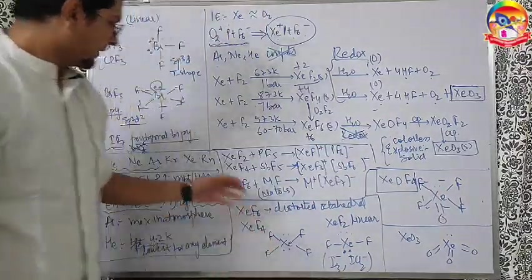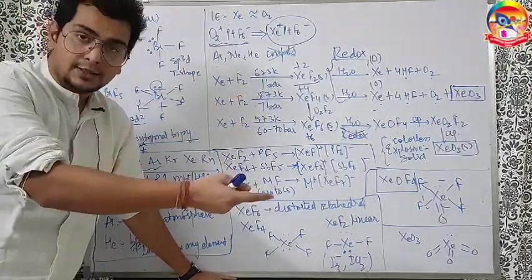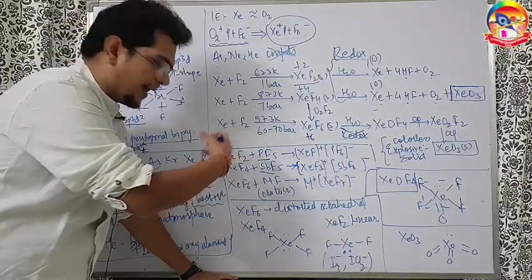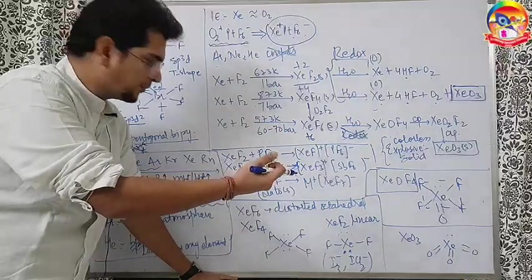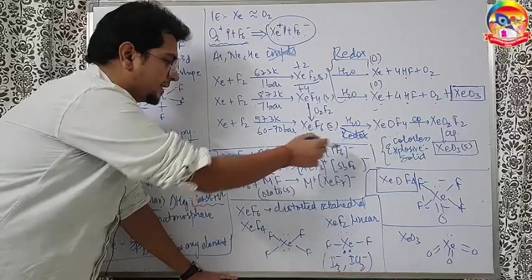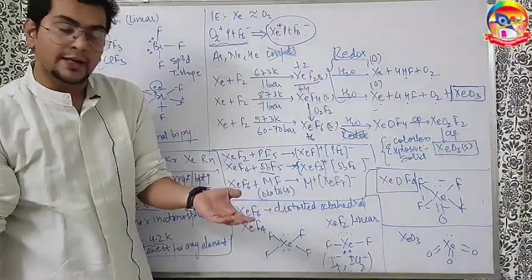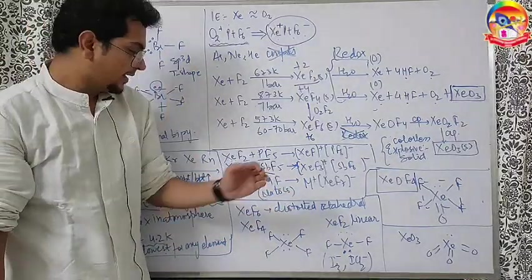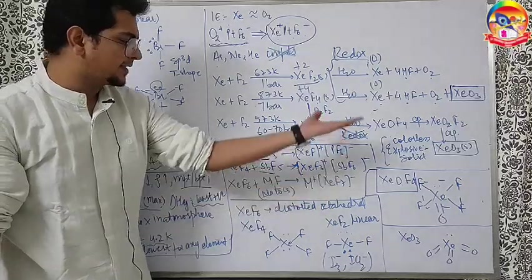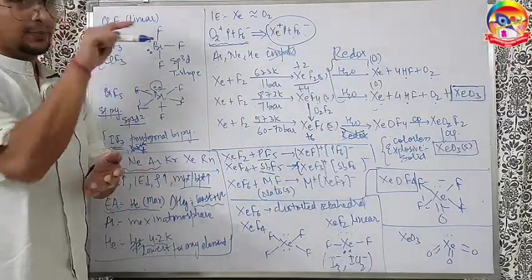Apart from that, XeF2, XeF4, XeF6, they can act like a fluoride acceptor donor both. It depends upon the other person. If the other person is PF5, SbF5, they have vacant d orbitals. And they love to take the F-. So, XeF2, XeF4 will give them F-. Becoming XeF+, PF6-, XeF3+, SbF6-. But if you take sodium to cesium fluorides, which are highly ionic fluorides, they will give F- happily. So, XeF6 will take the F-, making XeF7-. So, we understand xenon fluorides are fluoride acceptor as well as donor, depends upon the other person.